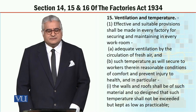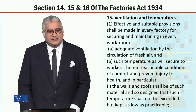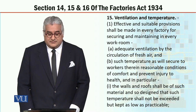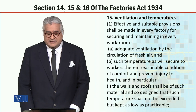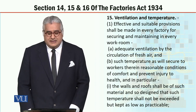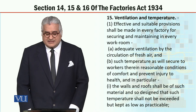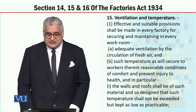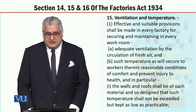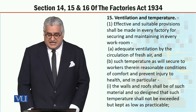Section 15, heading is Ventilation and Temperature. Effective and suitable provisions shall be made in every factory for securing and maintaining in every workroom adequate ventilation by the circulation of fresh air and such temperature as will secure to workers therein — meaning in the factory — reasonable conditions of comfort and prevent injury to health. In particular, the walls and roofs shall be of such material and so designed that such temperature shall not be exceeded but kept as low as practicable.